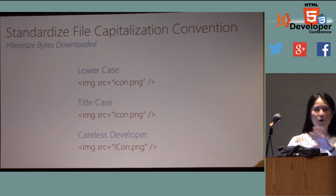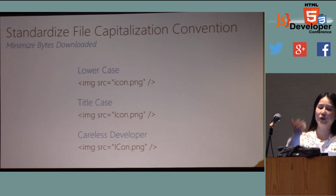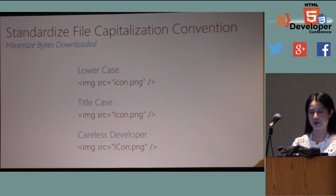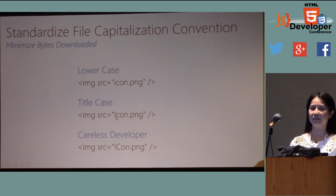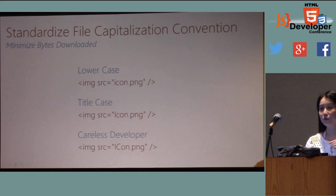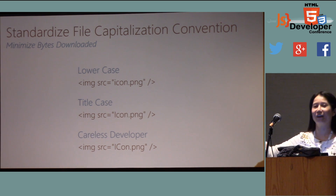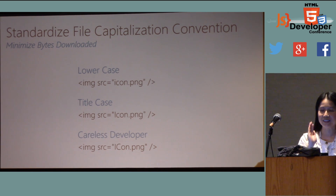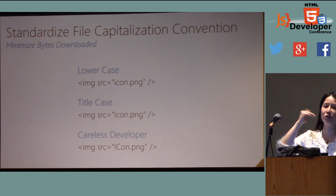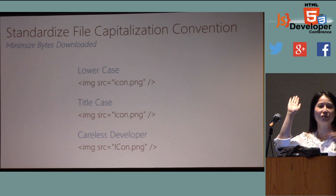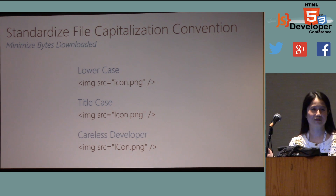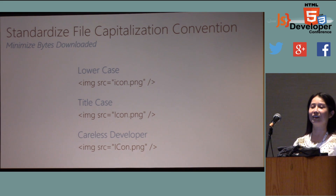One common mistake: sometimes we don't care about lowercase versus uppercase in filenames. If you do 'icon.png' in all lowercase in one place, but with a capital 'I' somewhere else, the server treats each as a new request and sends a new image to download every time — you're wasting resources. We see a lot of people doing this without paying attention, so be careful.